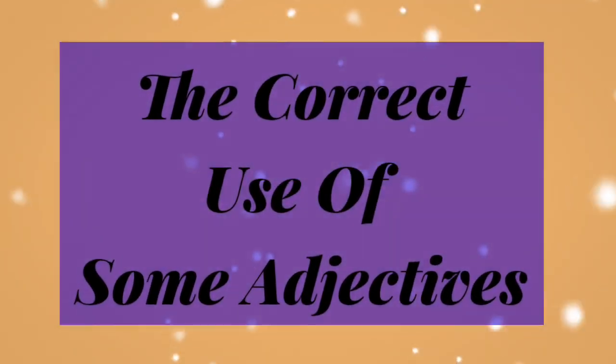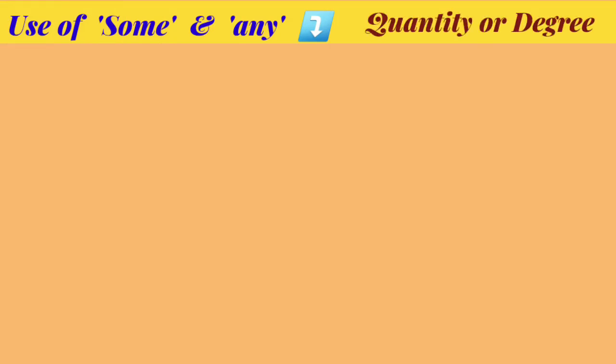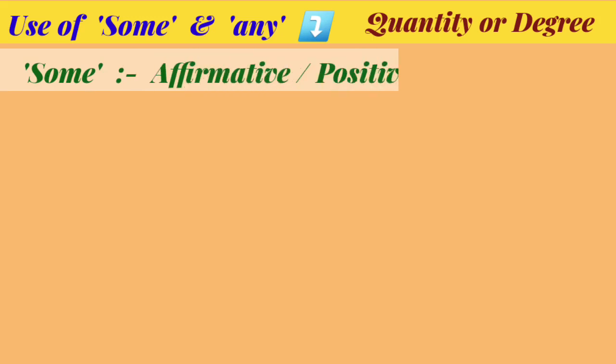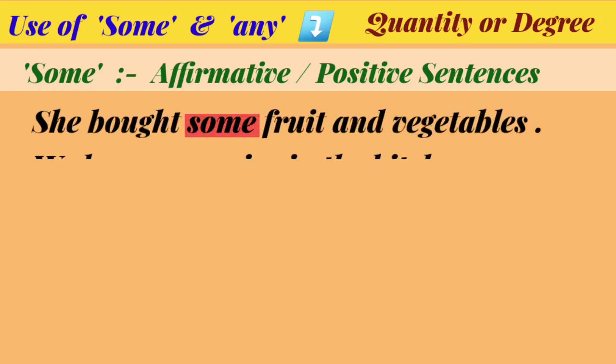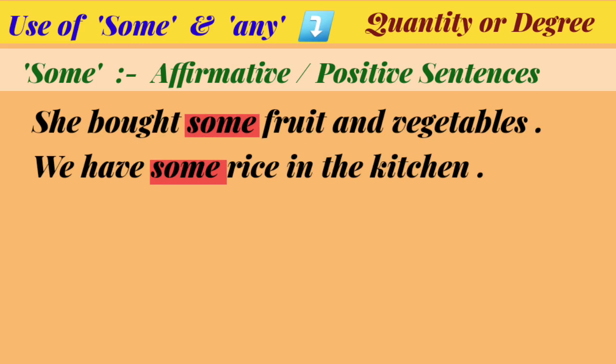Now, let's learn the correct use of some adjectives. First, some and any. Some and any are used to express quantity or degree. Some is used generally in affirmative or positive sentences. For example, she bought some fruit and vegetables. We have some rice in the kitchen.